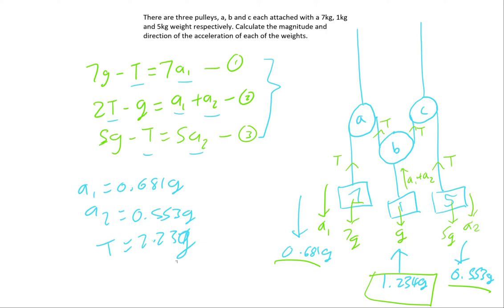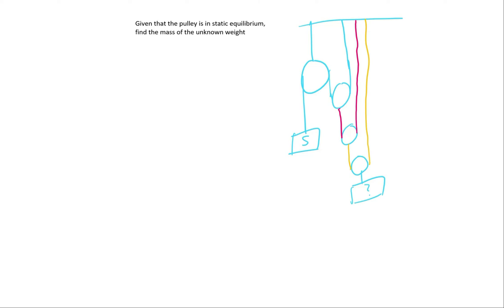Lastly, we will be doing a question regarding a pulley that is in static equilibrium. Given that the pulley system on the right is in static equilibrium, find the mass of the unknown weight. We will establish that the different strings are labelled by different colours, then draw the free body diagram. On the 5kg mass, there is the weight acting downwards — 5g — and the tension acting upwards equal to T. Moving on to the second pulley, since it is the same blue string, the tension here and here will also both be T.